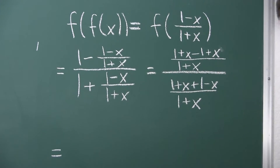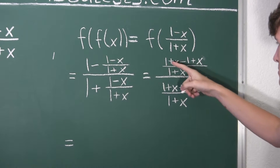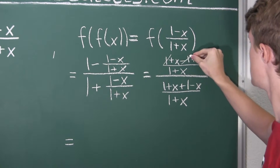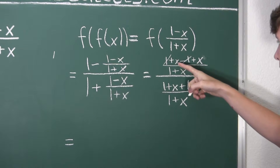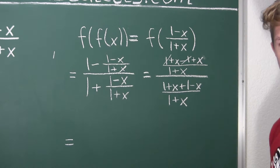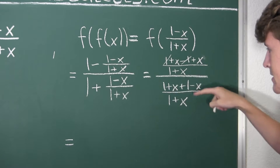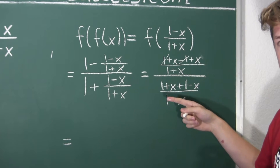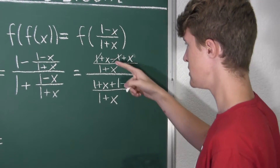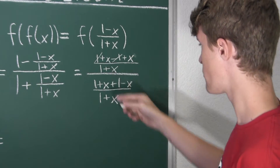Now we can simplify. In the numerator we have 1 plus negative 1, so the 1 and the minus 1 cancel out, leaving x plus x which is 2x over 1 plus x. And in the denominator, 1 plus 1 is 2 and x minus x cancels out, leaving 2 over 1 plus x. But this whole expression is just one fraction divided by another fraction.